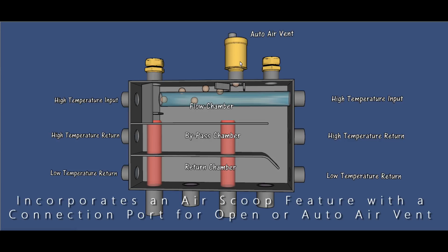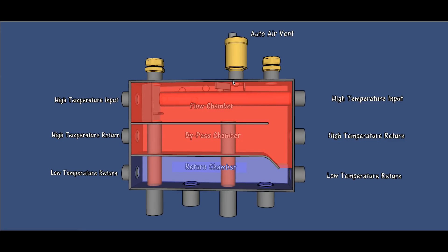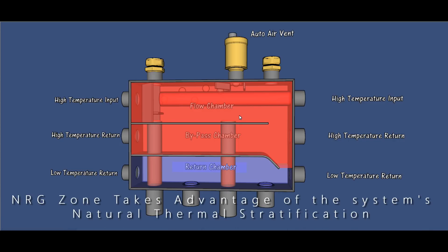You would put an automatic air vent here, or an open expansion vent, or any way of exiting air from the system. Within that you have a trap created that catches any air bubbles and allows them to escape. So if the manifold is being filled with water from a boiler, the top chamber is hotter.